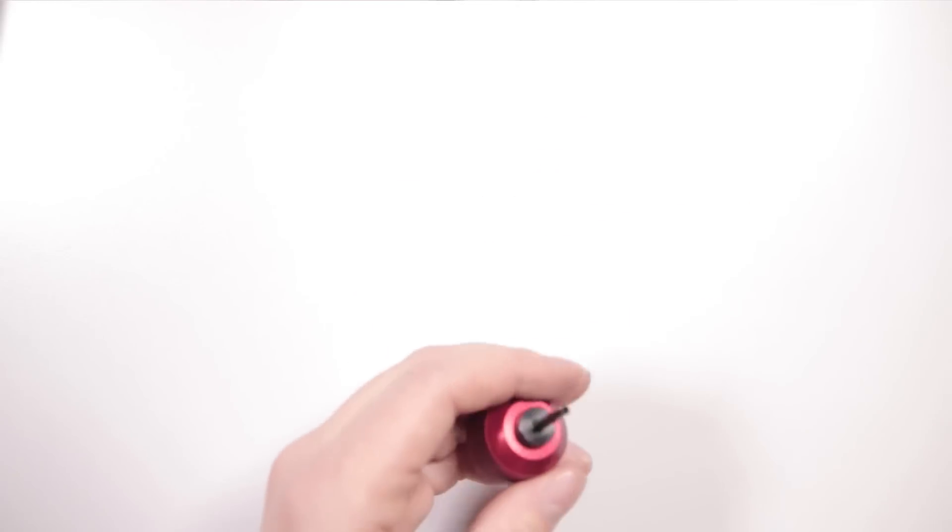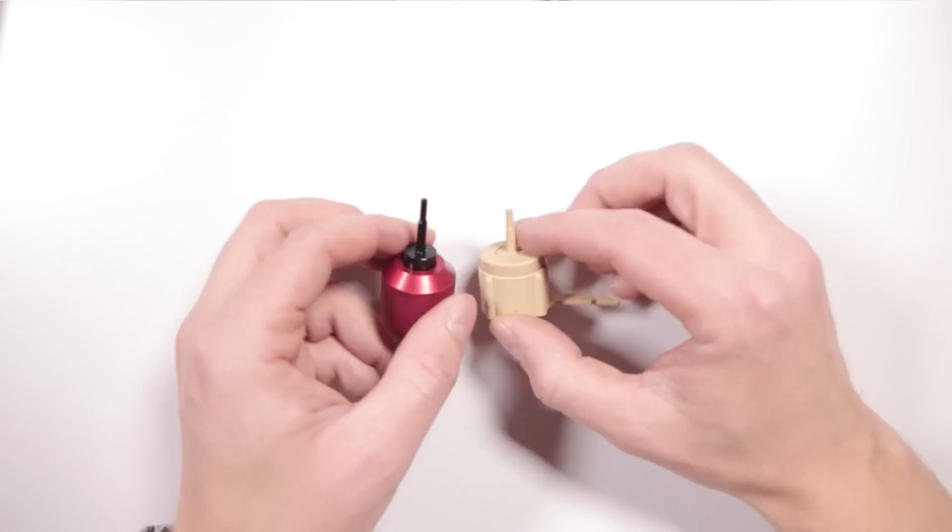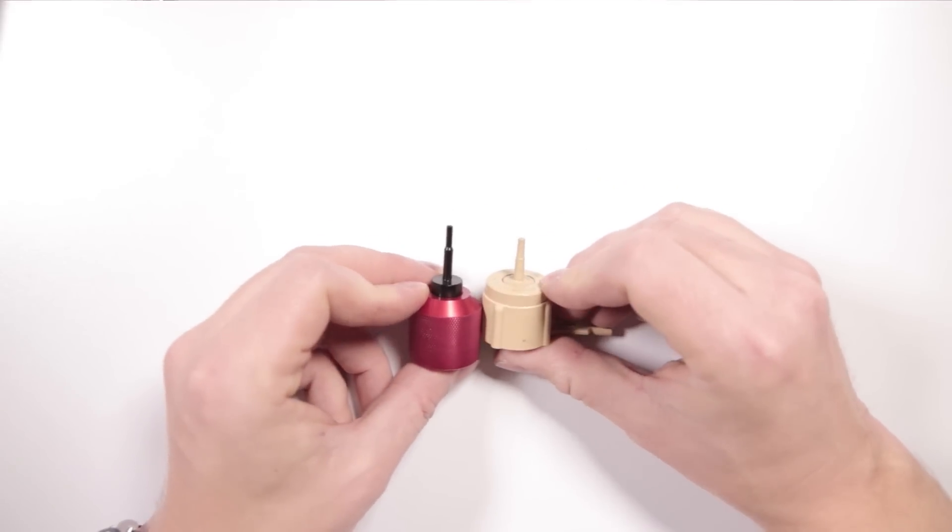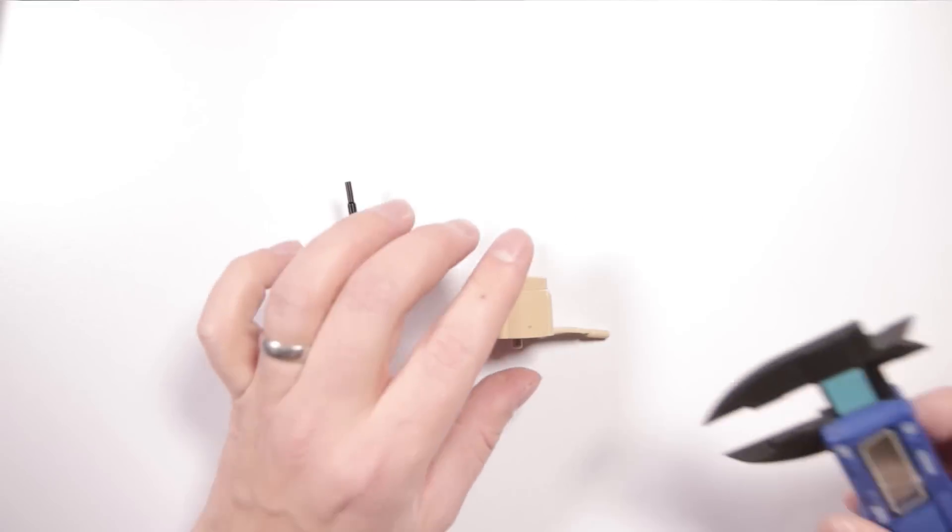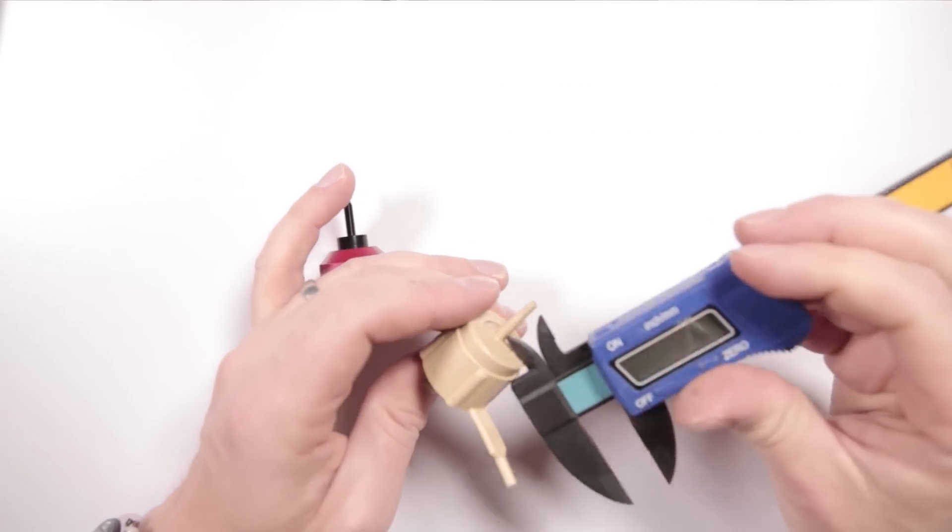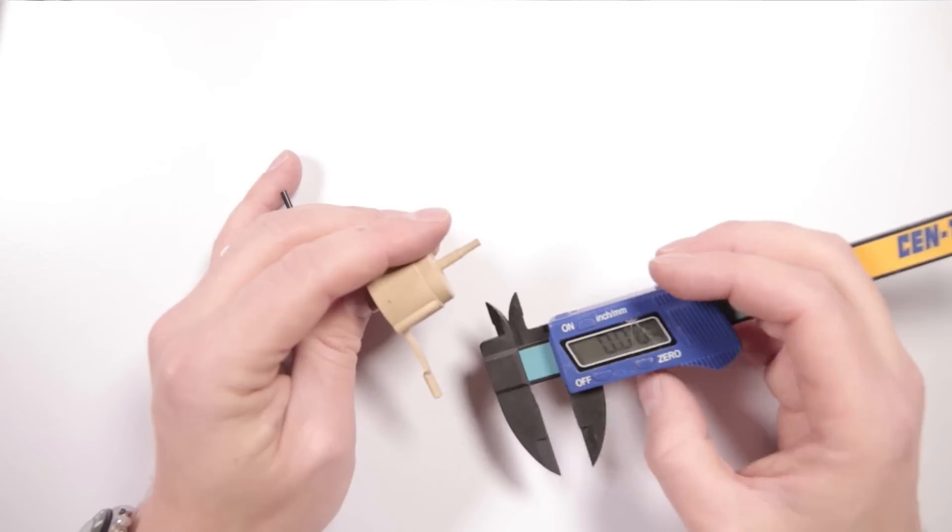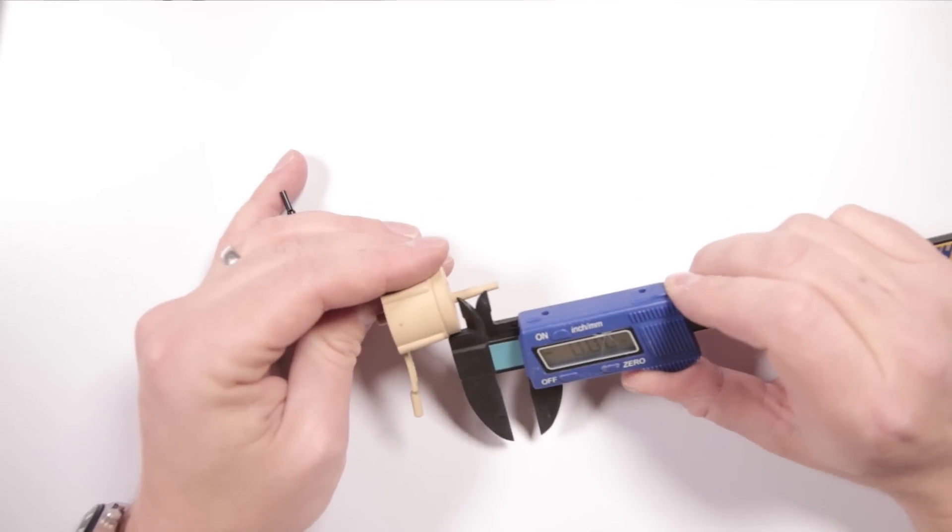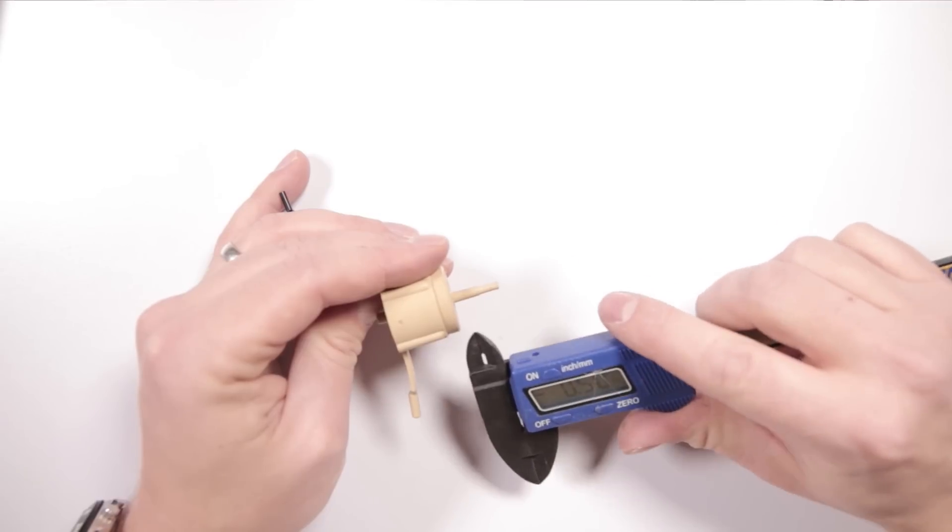We can show you the difference between this. I have an Airsoft Innovations version over here. Of course, I just dropped it on the floor. Thanks, Carter. The Airsoft Innovations version, if you look at the two of these, if I match them up, there's about, I would say, almost a quarter of an inch difference between the two of them. And if we go ahead and use an actual tool on zero.